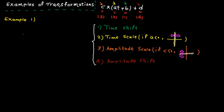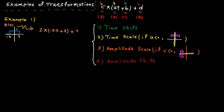Example number one: x(t) is given and the question is what is 2·x(−2t+3)+3. It would be awesome if you can pause the video and try to solve the example yourself, then continue watching and compare your solution to mine. Step number one: time shift the signal. The shift value is positive, so we need to shift the signal to the left by three units.